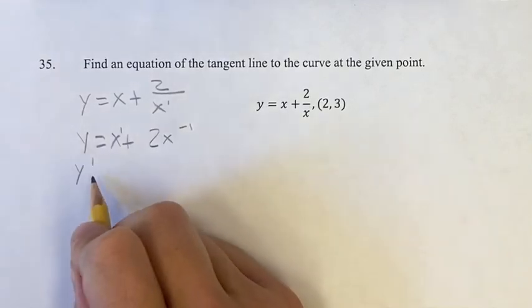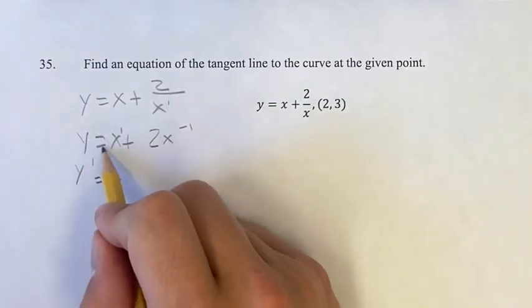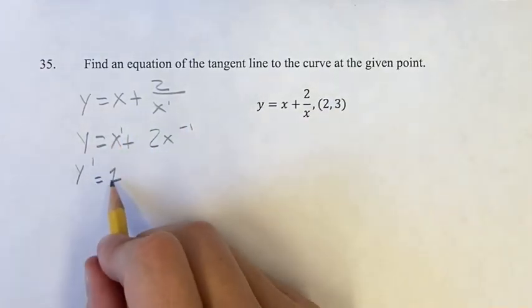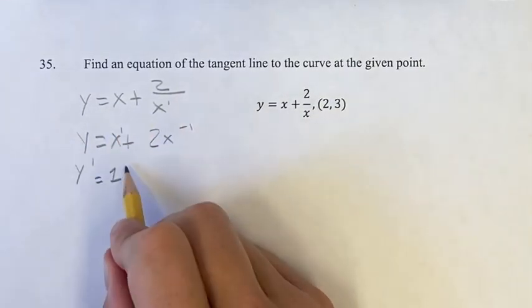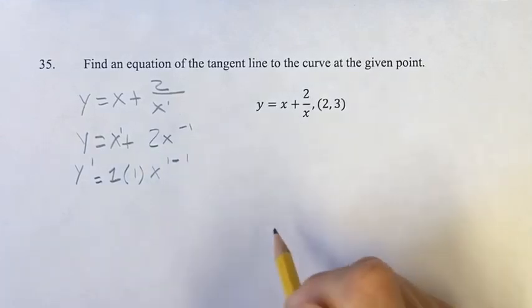Firstly, y prime, with a power function, you write the coefficient out in front, x is just 1x, so the coefficient is 1, you bring down the exponent, and then your new exponent is the old one, minus 1.